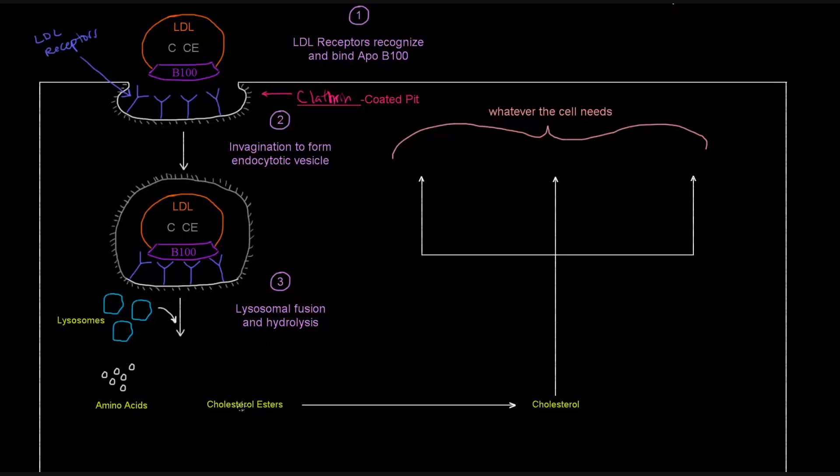These cholesterol esters coming from the LDL can be converted into cholesterol by lysosomal acid lipase to cleave these esters into cholesterol. Now the cell, this peripheral tissue cell, has cholesterol that it can work with.